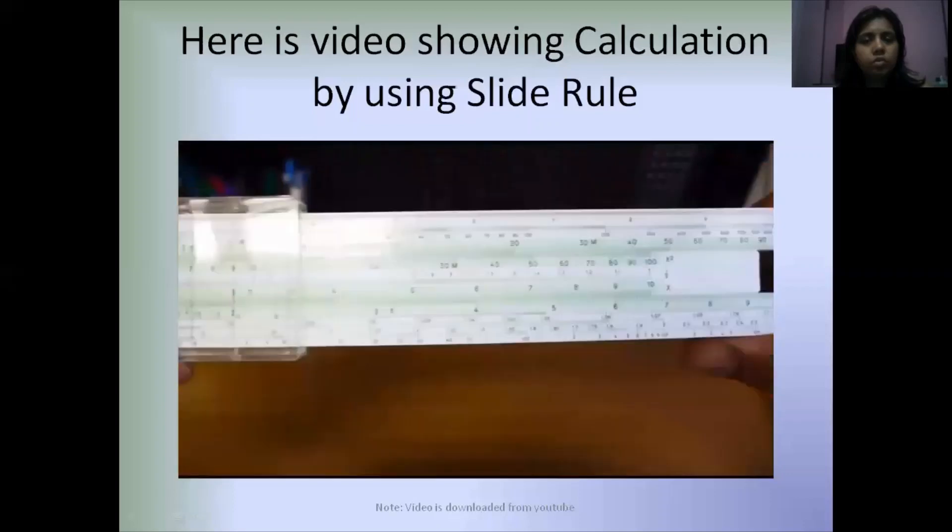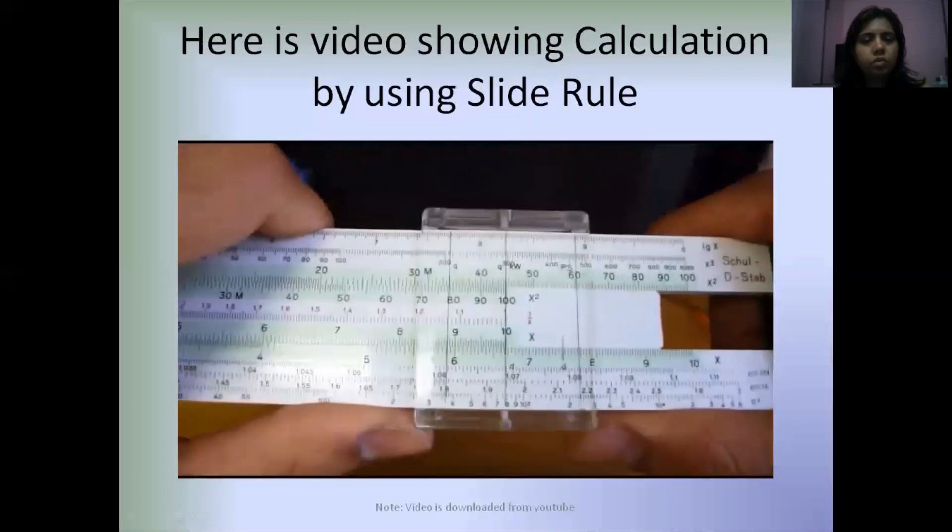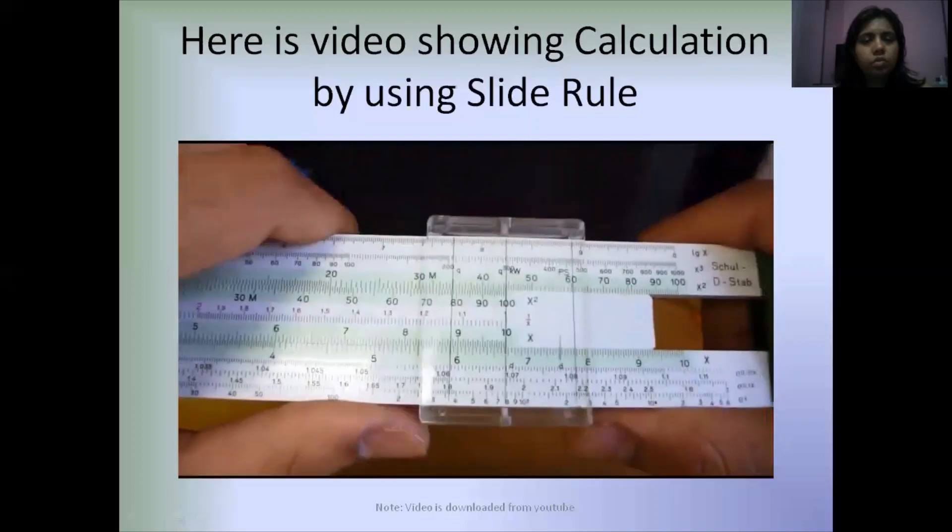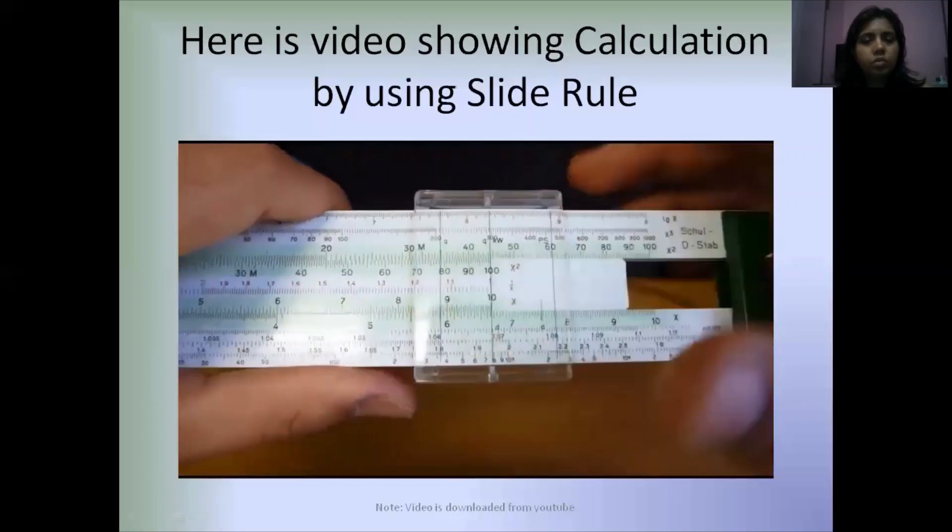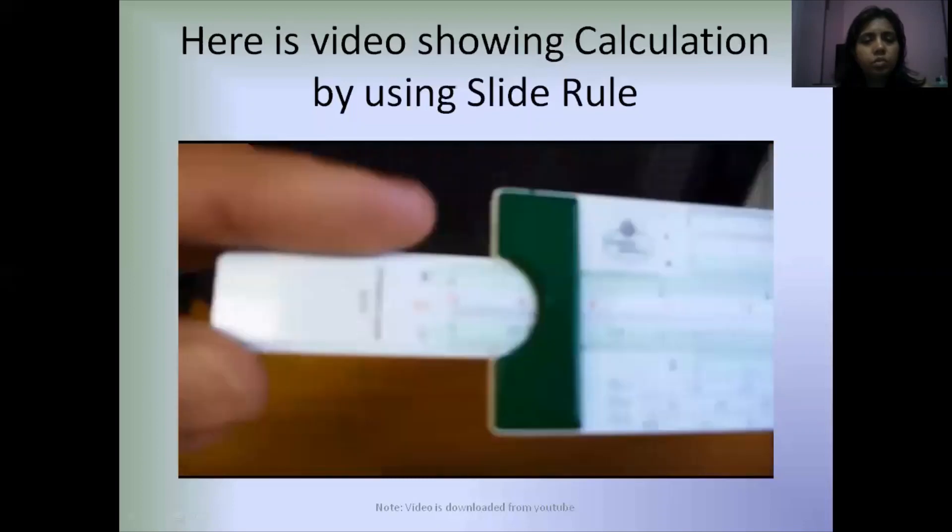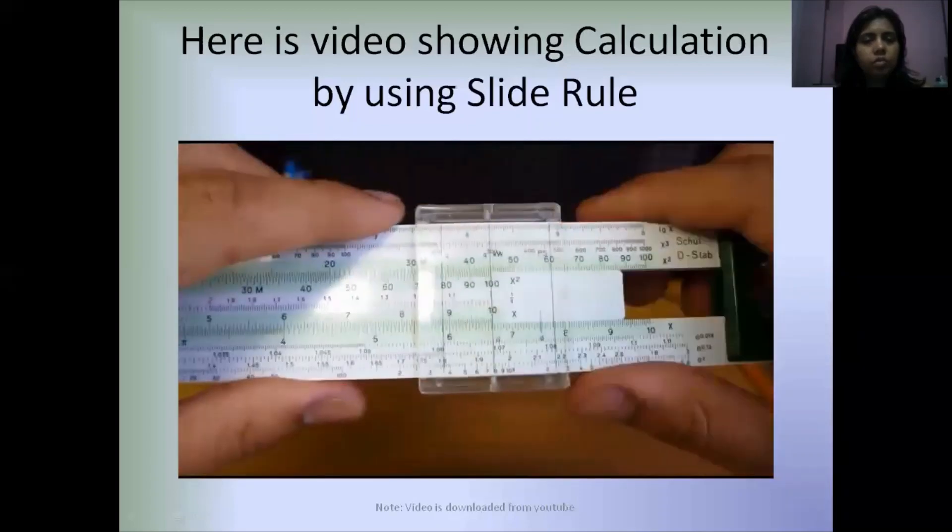And read the answer 0.667 off the index that lies on the scale. That's how you do division on a slide rule.